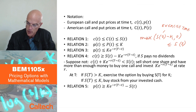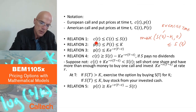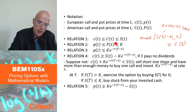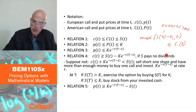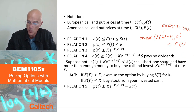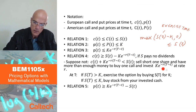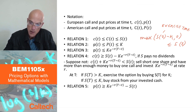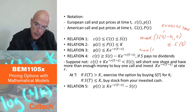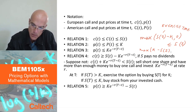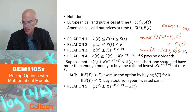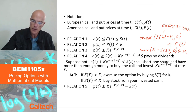Similarly for the put option: the European price cannot be larger than the price of the American put for the same reason as before. And both of them have to be less than the strike price K. That's because for the put the payoff is the maximum of K minus S(τ) and 0, which is always less than K. So no matter when it's exercised, the payoff is less than K, meaning the price cannot be larger than K.